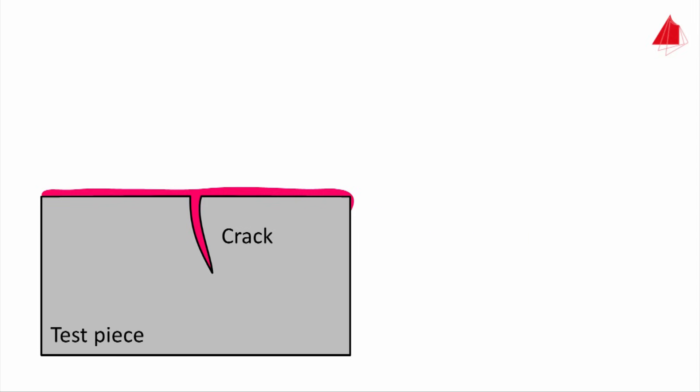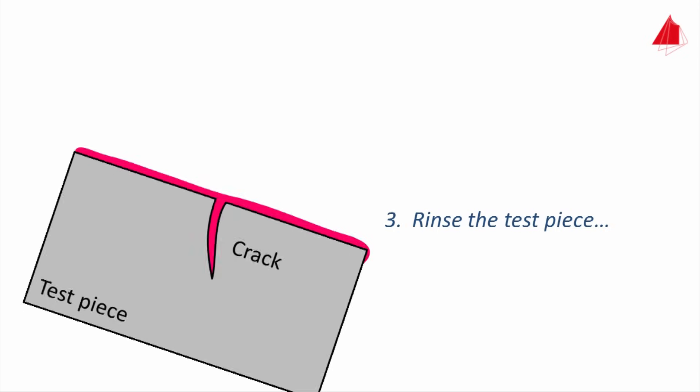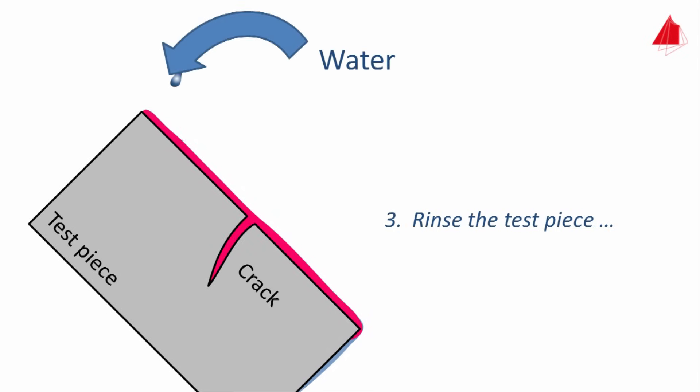After several minutes of dwell time, the third step is to rinse the part's surface cautiously with water. The water removes the penetrant completely from the surface, but leaves it in the crack.